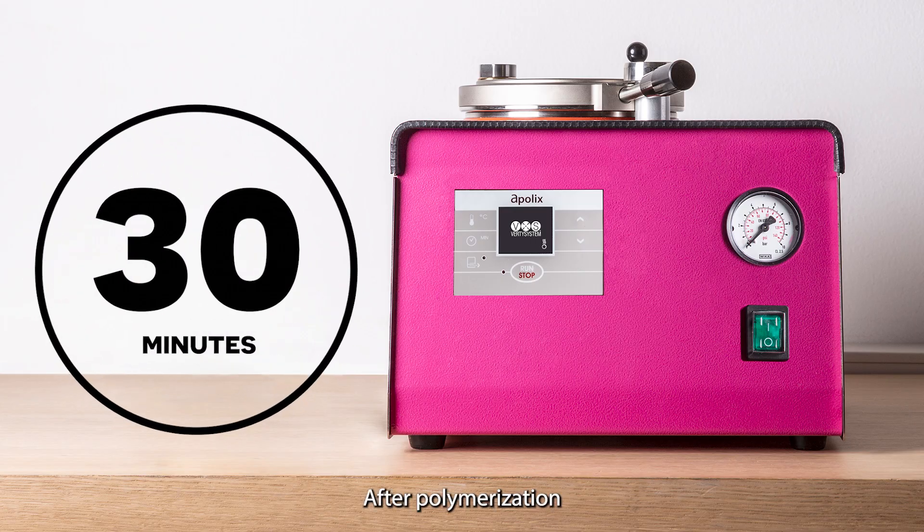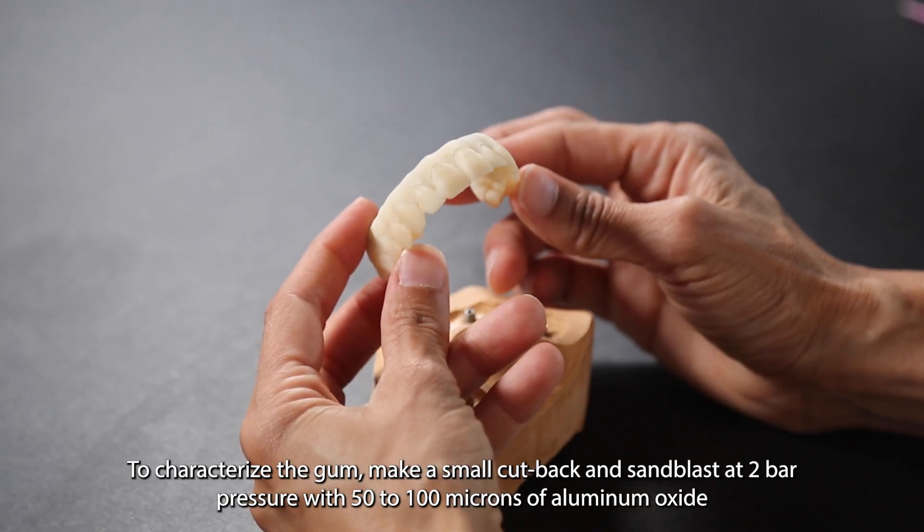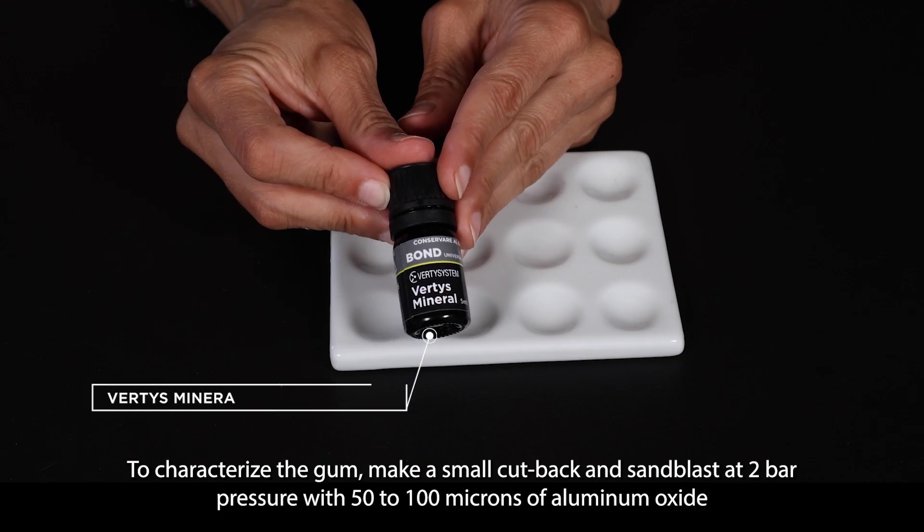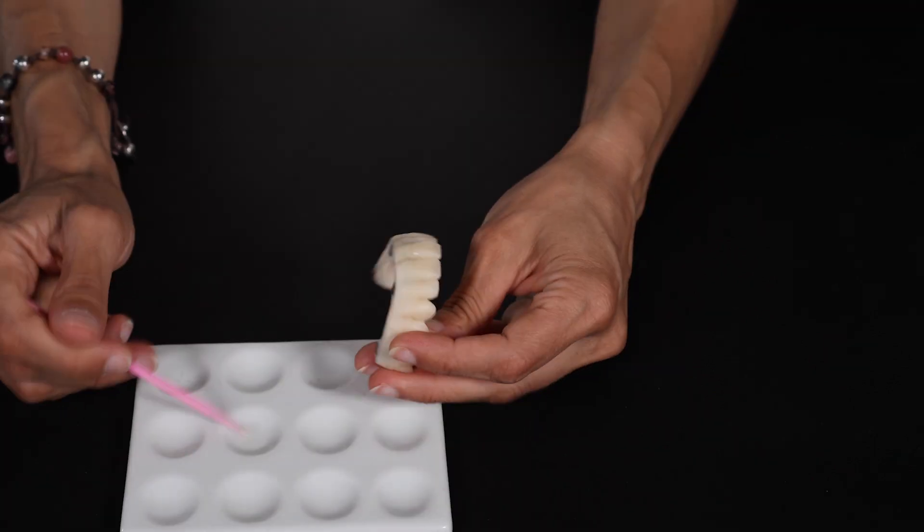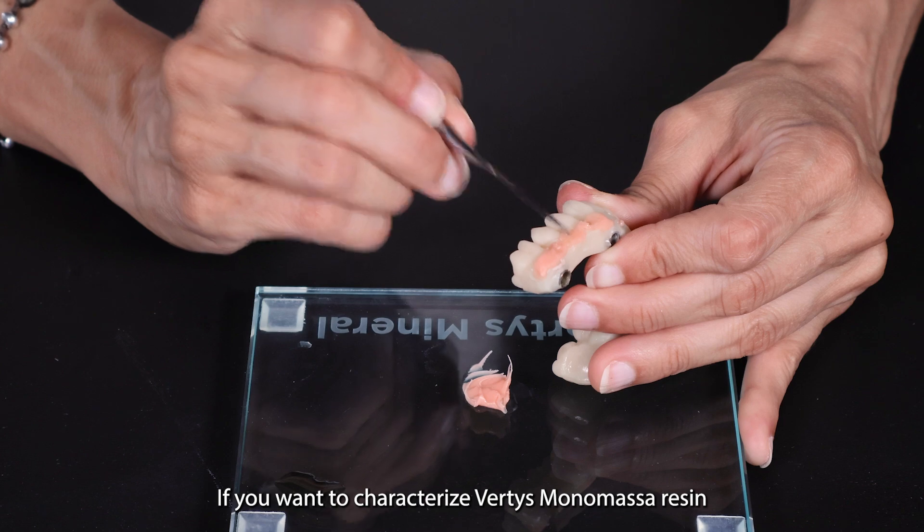After polymerization, open the flask and remove the implant bridge. To characterize the gum, make a small cutback and sandblast at 2 bar pressure with 50 to 100 microns of aluminum oxide. Then apply Vertis Mineral Universal Bond if you want to characterize Vertis Monomassor resin.